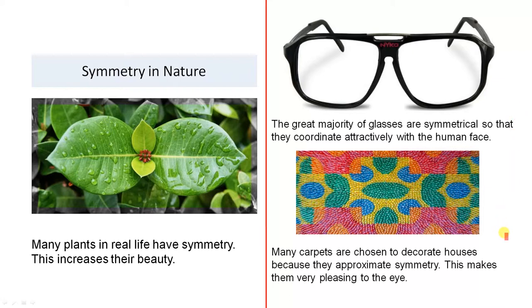Many carpets are chosen to decorate houses because they approximate symmetry. This makes them very pleasing to the eye. So you have a quick look at that. It does look symmetrical. It might be symmetrical in the great majority of cases. There might be little areas there where it isn't. But in the main, you look at it quickly and you see that it is quite symmetrical. And that is what makes it quite attractive.